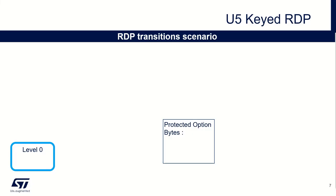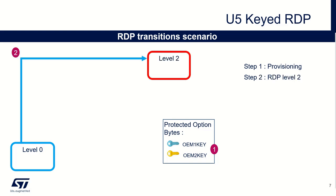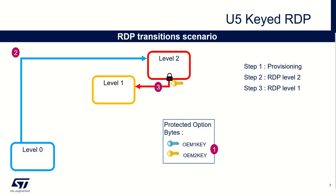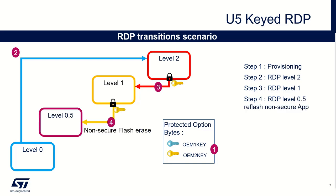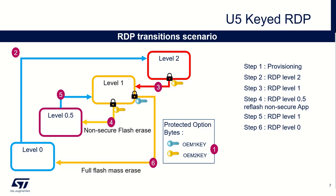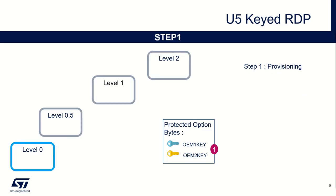This hands-on scenario will have seven steps. The first step is key provisioning — writing the OEM keys into the option bytes. Then we change RDP level from 0 to level 2. Thanks to the OEM2 key, we can do the regression from level 2 to level 1, and then from level 1 to level 0.5. To come back to level 0 we need to go through level 1, and thanks to the OEM1 key we can do the regression to level 0. The last step will be to remove the OEM keys.